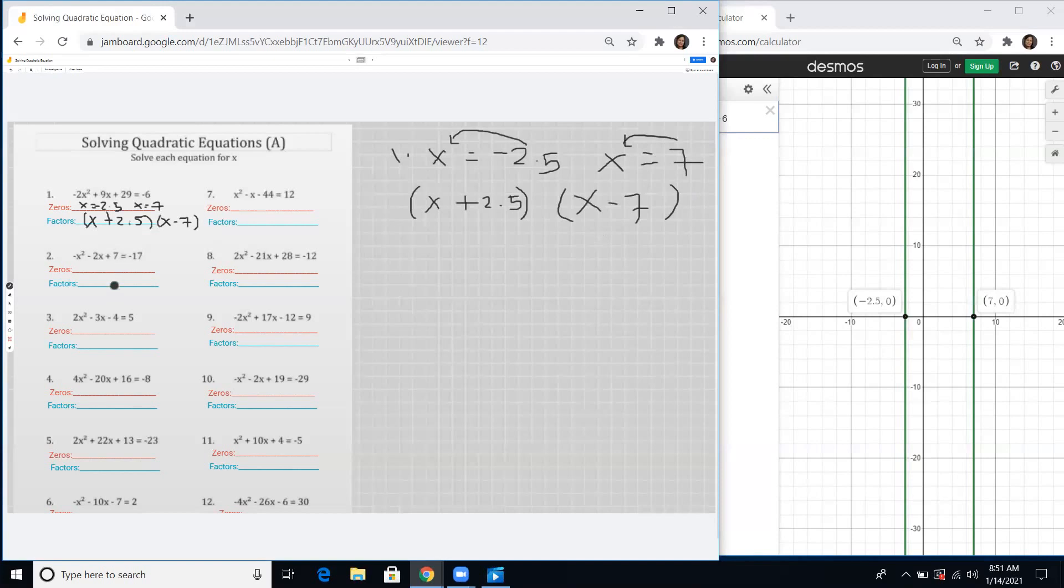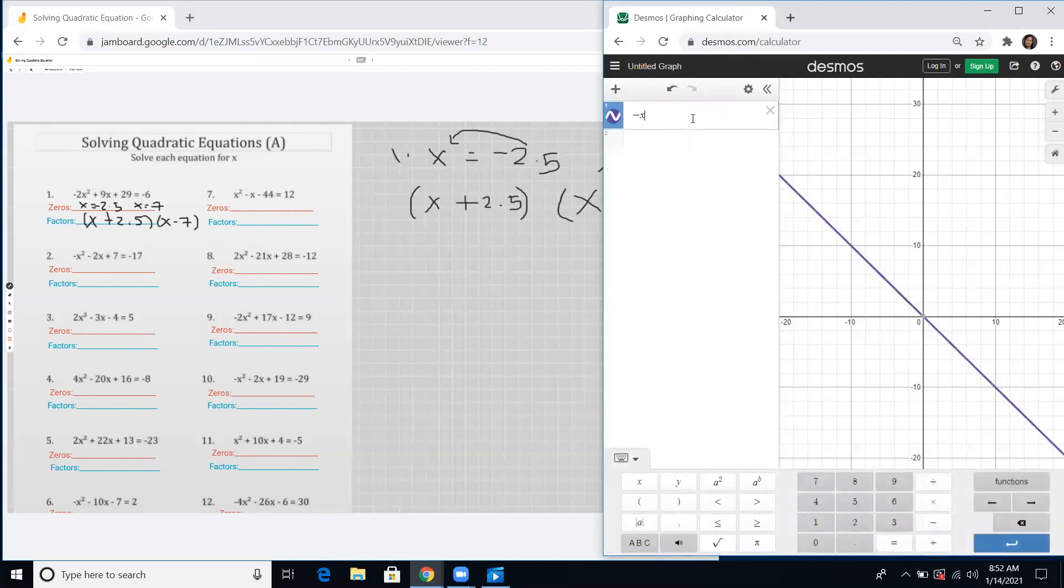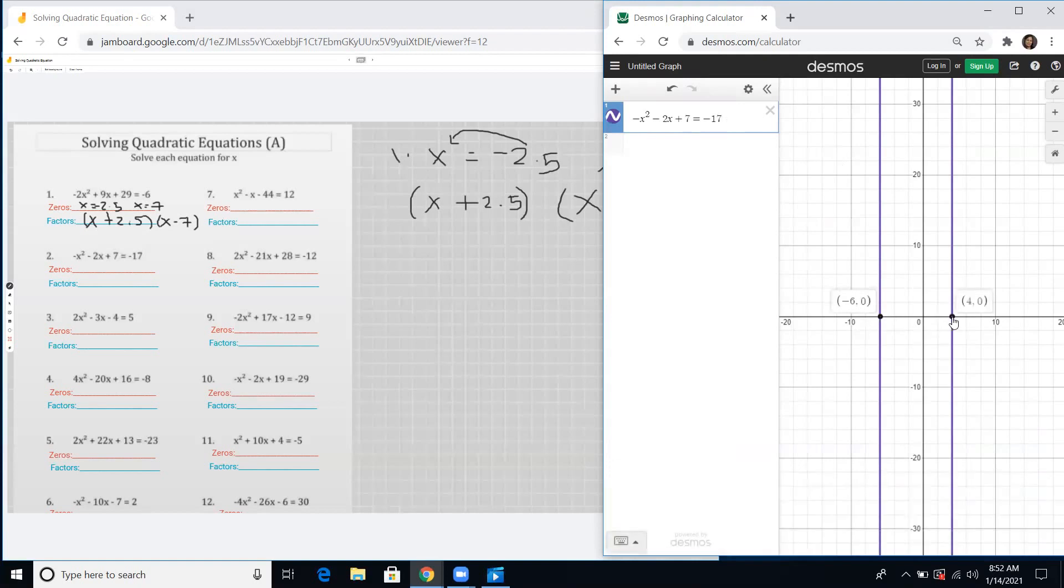Next we'll have number two. We have negative x squared minus 2x plus 7 equals negative 17. The parabola is a sad face because the quadratic term is negative, but we're just looking for the x-values for the zeros, roots, solutions, and x-intercepts. We have negative 6 and positive 4.